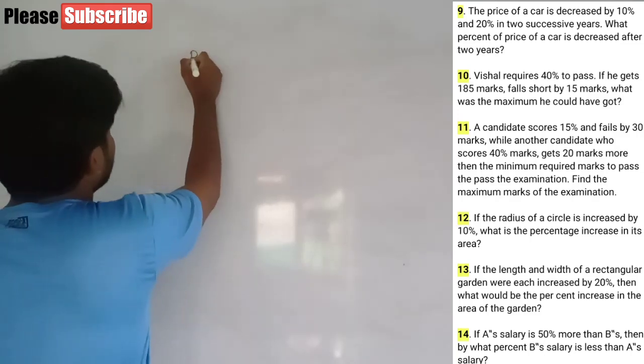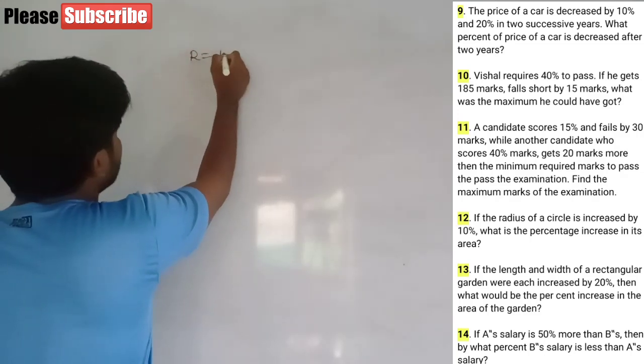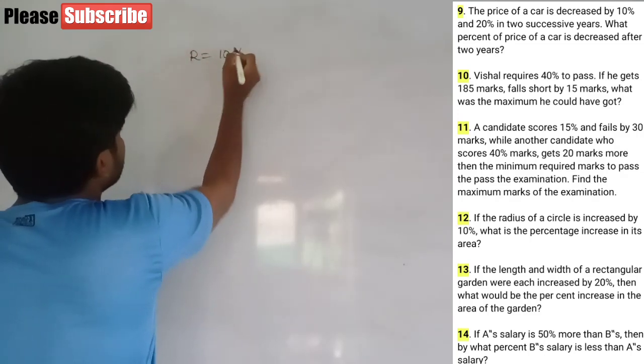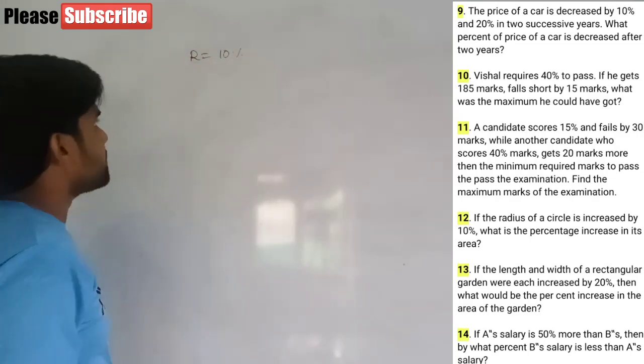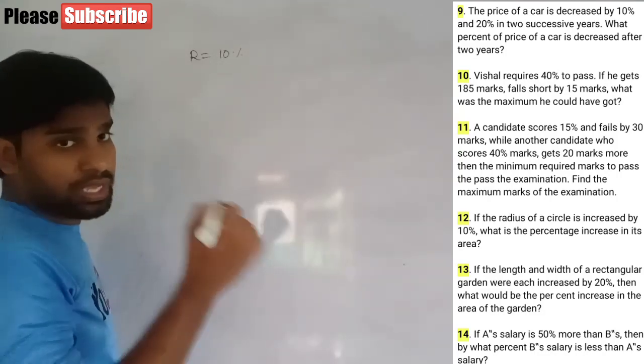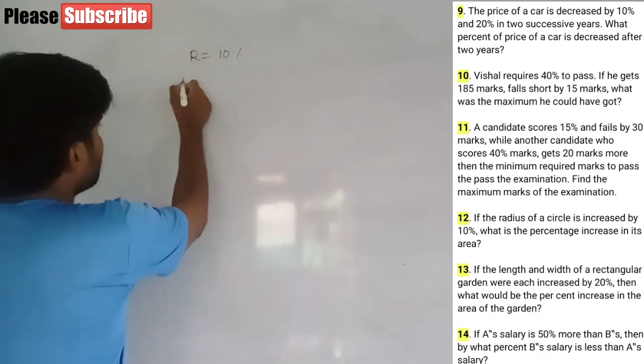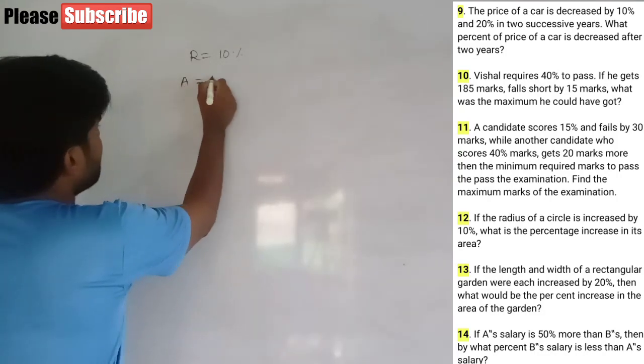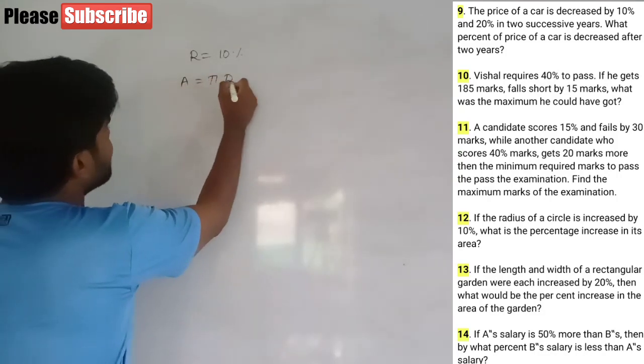Radius increased by 10%. Area of circle equals pi r squared, and since r appears twice (squared), both r's contribute 10% increase.